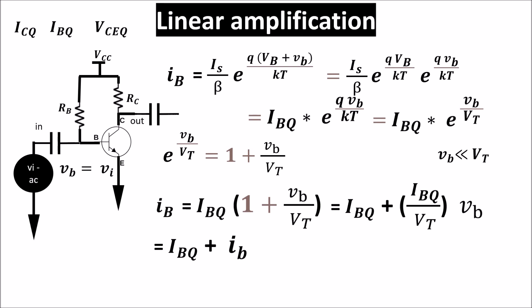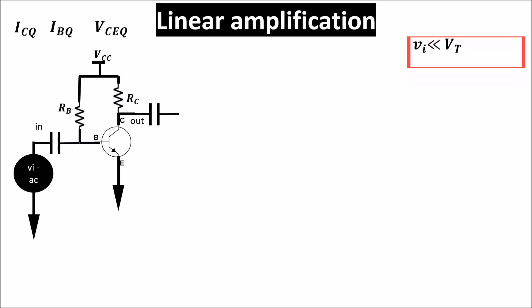So we see the total current IB is the DC current IBQ plus the AC current IB. So under the small signal hypothesis, with the input signal much less than 26 millivolt, for example under 2 millivolt, we can say that there is a linear relation between the AC base current and the AC base voltage, and we can write the total base current as sum of the DC current and the AC current.